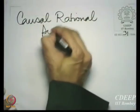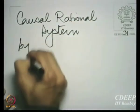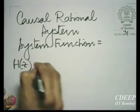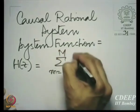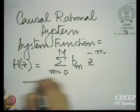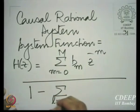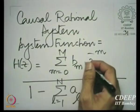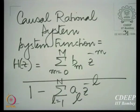Let us put before ourselves the specific problem that we need to discuss. We have before us in realisation a causal rational system, and the system function takes the following form: summation of B_M times Z raised to the power minus M, for M going from 0 to capital M, divided by 1 minus the summation of A_L times Z raised to the power minus L, for L going from 1 to capital N. So we have a numerator and denominator polynomial, and our objective is to realise this system.